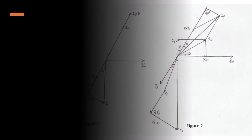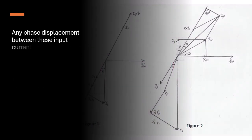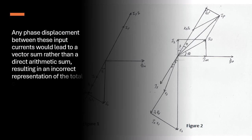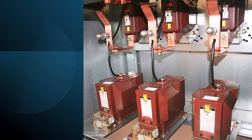Any phase displacement between these input currents would lead to a vector sum rather than a direct arithmetic sum, resulting in an incorrect representation of the total current.